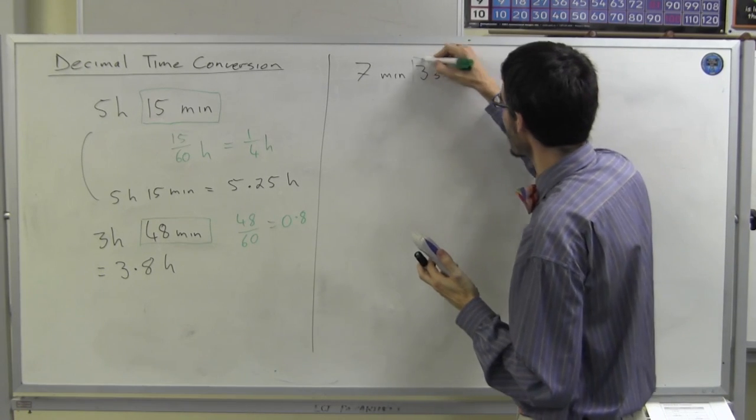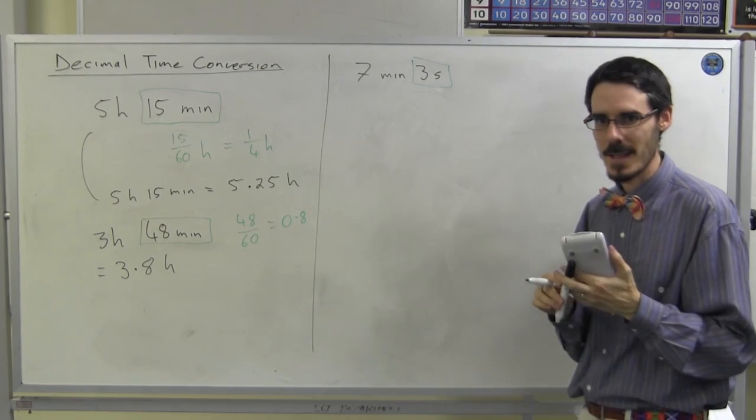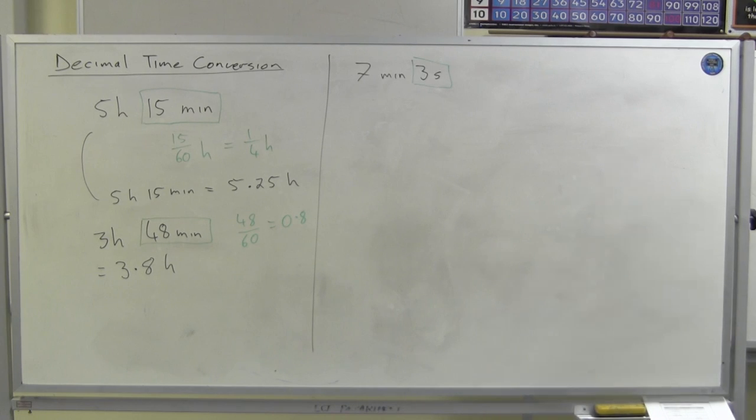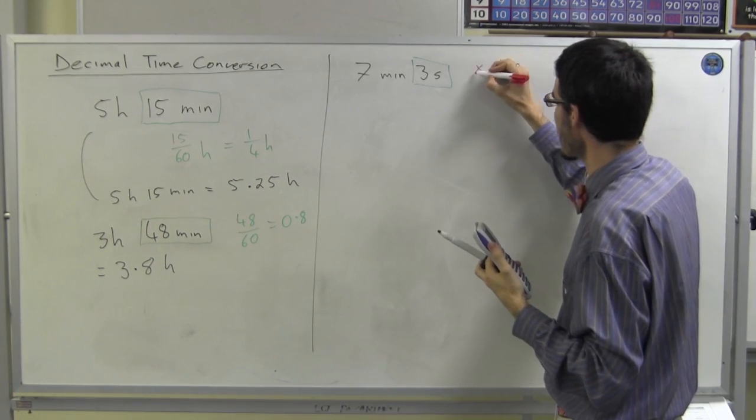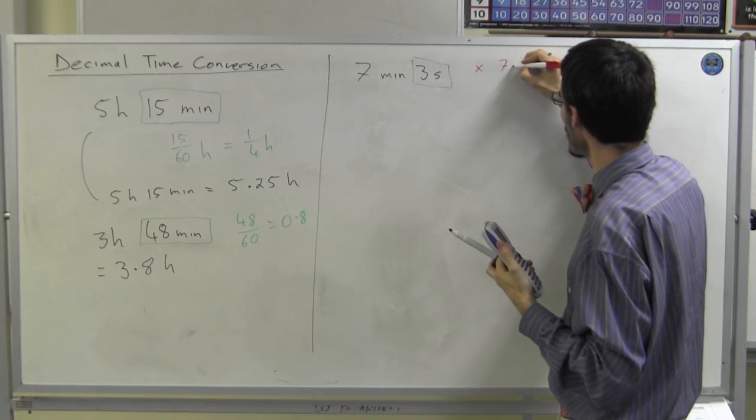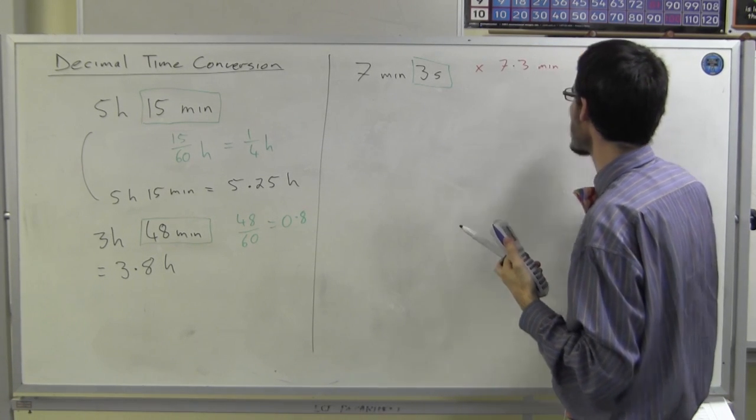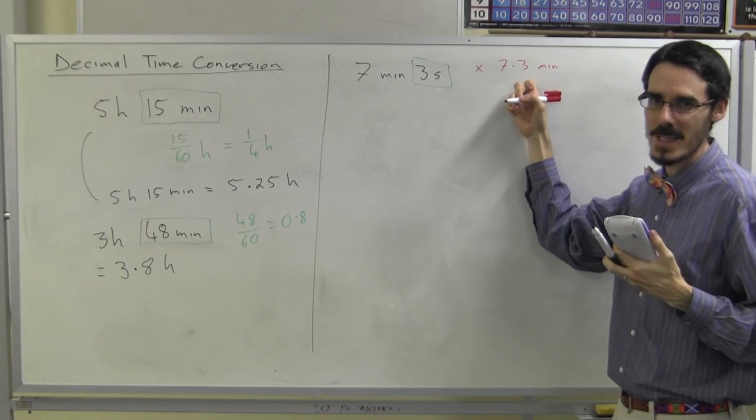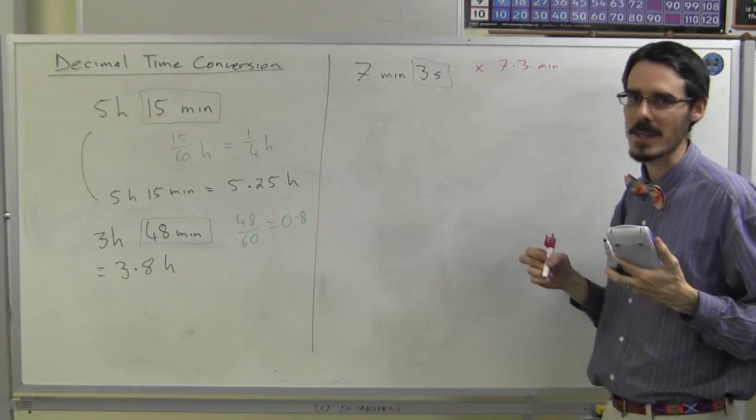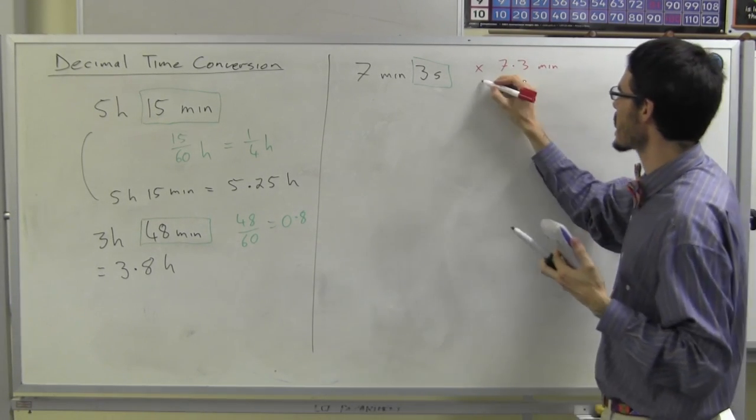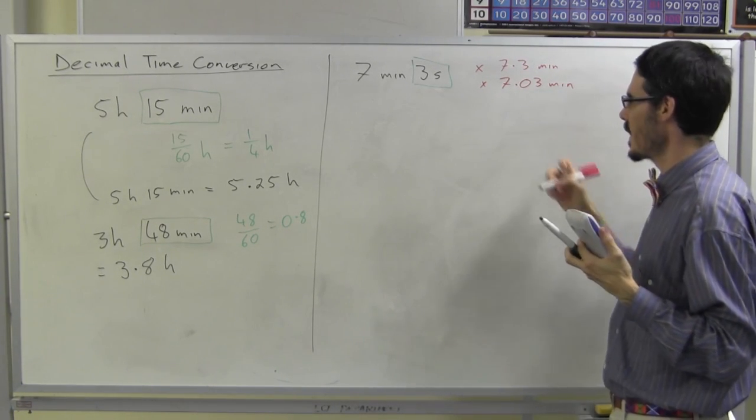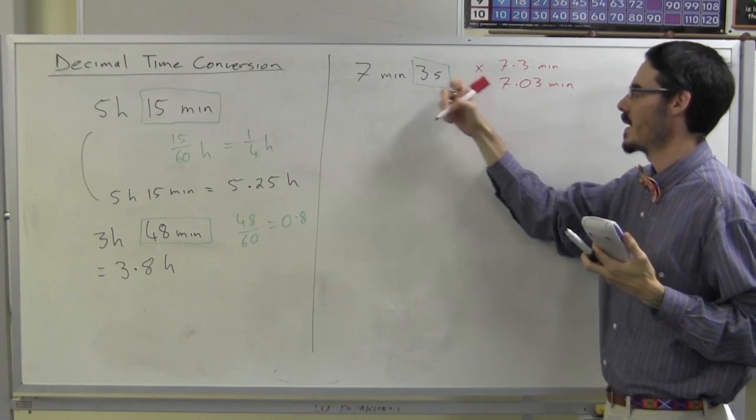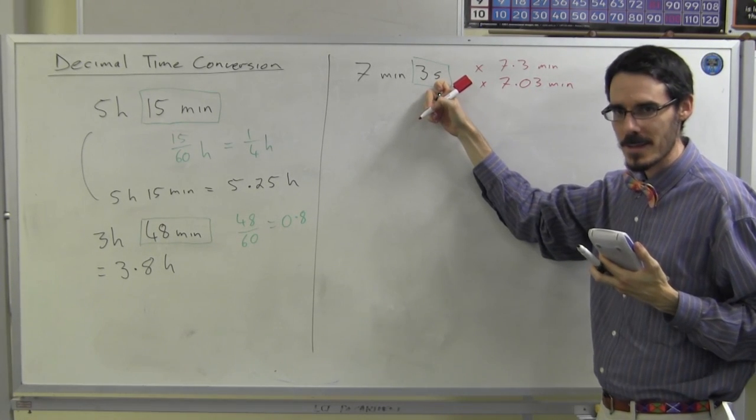I need to work out the three seconds as a decimal. Once again, just to make it clear, it's not the same as 7.3 minutes. That would be 3 tenths. It's 3 sixtieths, not 3 tenths. It's not 7.03 minutes. That would be 3 hundredths. I need 3 sixtieths.